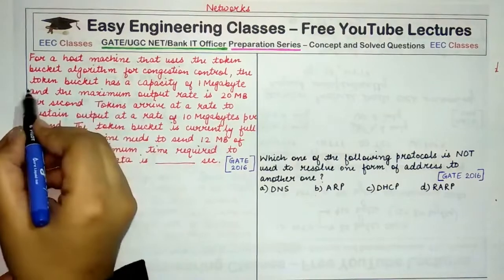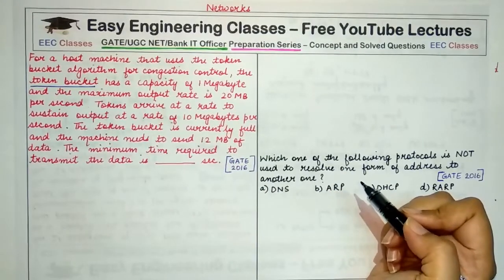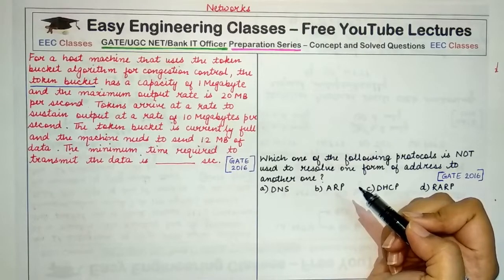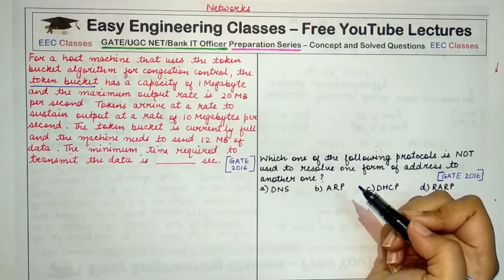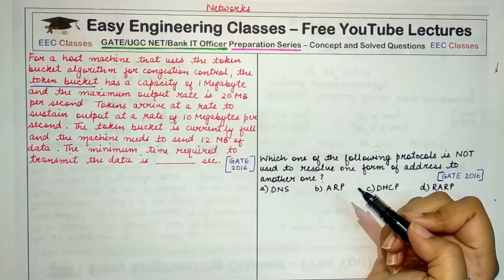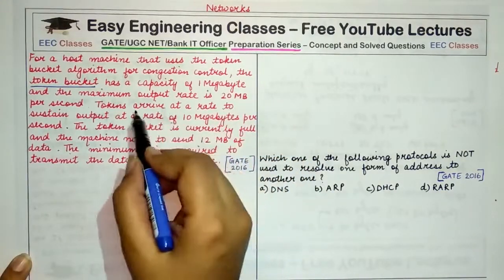The major thing to note in this question is that it uses the token bucket algorithm. A token bucket algorithm basically works by sending packets only in the presence of tokens. We have a bucket of tokens, and if a packet is ready to be sent on the network, only if there is an available token in the token bucket will the packet be sent out; otherwise the packet waits or may be discarded. Token bucket ensures that as long as tokens are available, they are given to packets so they can be sent to the network; otherwise packets wait for a token to be generated.